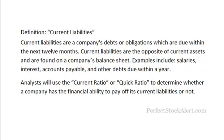Examples include things like salaries, interest payments, accounts payable, and other debts due within a single year. Analysts will use the current ratio or quick ratio, also known as the asset test ratio, to determine whether or not a company has the financial ability to pay off its current liabilities.